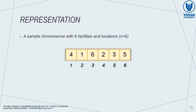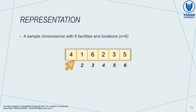Each chromosome is represented as a permutation, which is nothing but a sequence of numbers from 1 to n, where n is the number of facilities and locations. The idea is that each facility is assigned to its index location. For instance, if we had 6 facilities and locations, one chromosome might be like in the figure — facility 4 would be assigned to location 1, facility 1 to location 2, and so on.